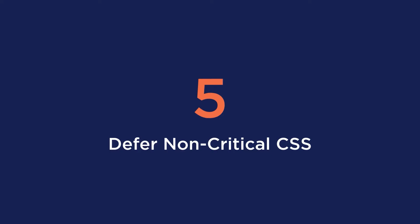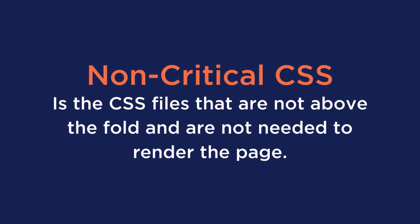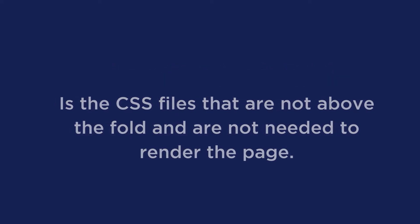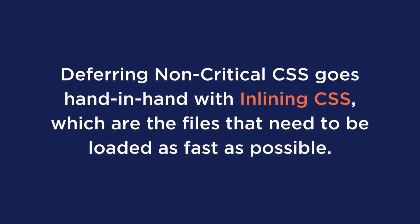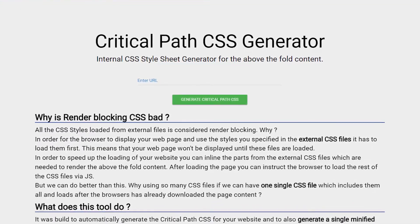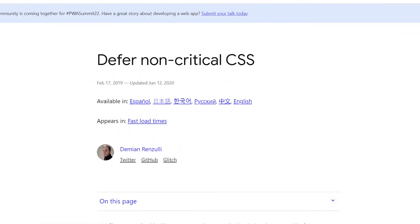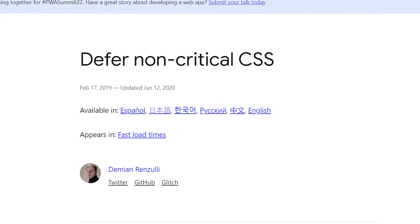The fifth option is to defer non-critical CSS. By deferring non-critical CSS, this will take care of the parse HTML and CSS category. Non-critical CSS are the CSS files that are not above the fold and are not needed to render the page. If you want to manually do this, deferring non-critical CSS goes hand in hand with inlining CSS — the files that need to be loaded as fast as possible. You should identify and inline the critical CSS in the HTML code using a critical path CSS generator, and then load the non-critical CSS file asynchronously by applying the pattern shown on screen. We will leave a link with the post showing you how to do this below, as this is a lot to unpack in this video.